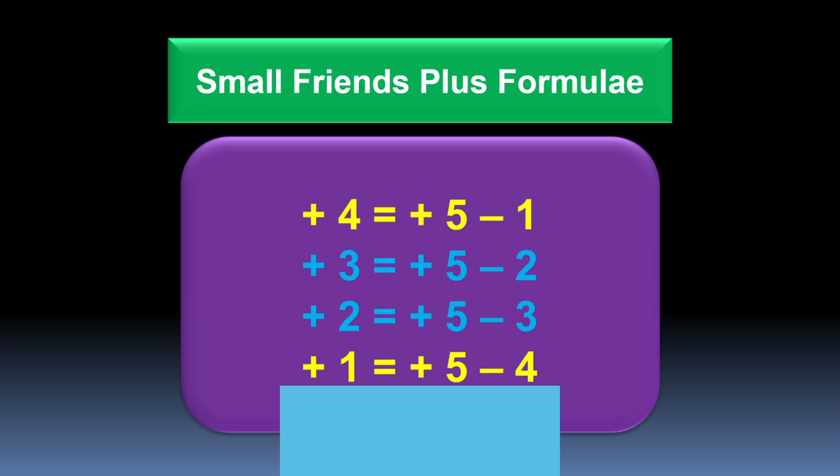Let's understand and learn the small friends plus formulae. The first formula is: plus 4 equals plus 5 minus 1. The next formula is: plus 3 equals plus 5 minus 2. Next formula is: plus 2 equals plus 5 minus 3. And the last formula is: plus 1 equals plus 5 minus 4.